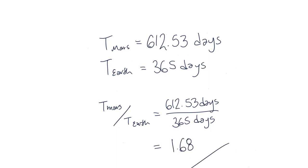Therefore, Mars takes 1.68 times longer than Earth to orbit the Sun. Now if you look up the orbital period of Mars compared to that of Earth, you will find that Mars actually takes 1.88 times longer to orbit the Sun. Have we done anything wrong?